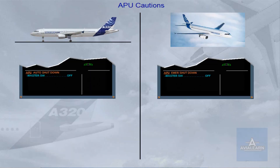On the ground, an APU auto-shutdown occurs for a reason other than a fire, or when APU parameters are exceeded. If a fire is detected, an APU auto-shutdown occurs with the APU fire procedure, and automatic extinguishing is initiated. Note: there is no APU fire auto-extinguishing in flight. In flight, an APU auto-shutdown occurs for the same reasons. If there is a fire, the APU auto-shutdown procedure is displayed at the end of the APU fire procedure. Note: this warning requires flight crew actions, and there is no automatic shutdown in flight.